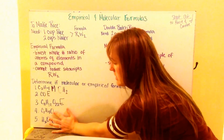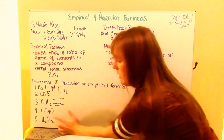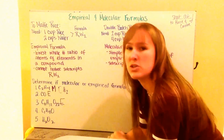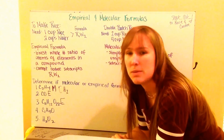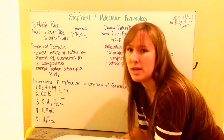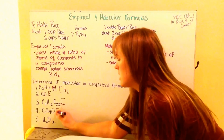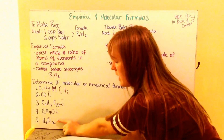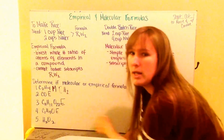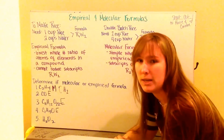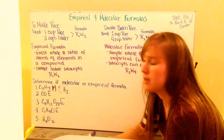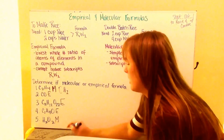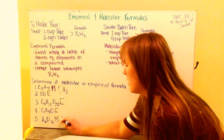Same thing here with my C2H4O1. Anytime there's one element with an implied subscript of one, that's going to be empirical, because it cannot be reduced any more than it is. So again, this is empirical. And then finally, hydrogen peroxide, H2O2 — both subscripts are two, meaning they can both be reduced by two. Therefore this is molecular, and the empirical formula is HO.